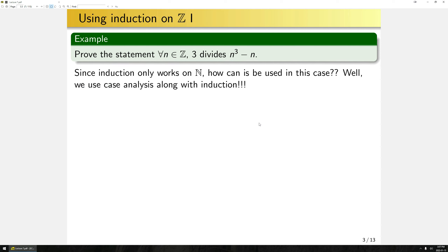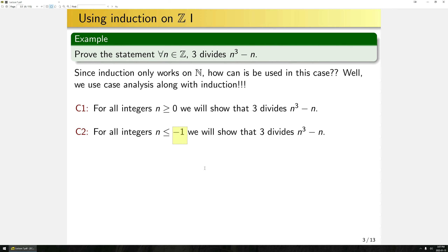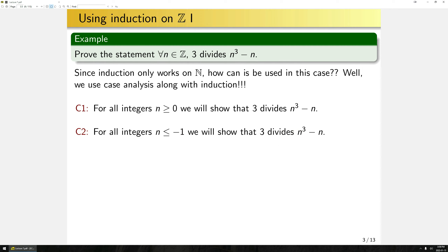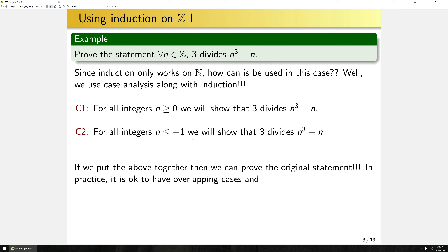One way is to use case analysis along with induction — doing induction twice. First, we apply induction for all integers N greater than or equal to 0 to show 3 divides N cubed minus N. Second, we show it for all integers N less than or equal to 0. In the second case, induction is slightly different: instead of showing P(N) implies P(N+1), we show P(N) implies P(N−1), since we're going to more negative values. In practice, having overlapping cases — like both covering N=0 — can reduce the work needed.